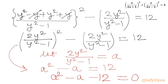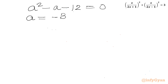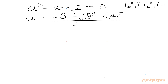The quadratic equation is A squared minus A equal to 12, or A squared minus A minus 12 equal to 0. We will substitute 2y squared over (y squared minus 1) back once we solve this quadratic. So our equation is A squared minus A minus 12 equal to 0.